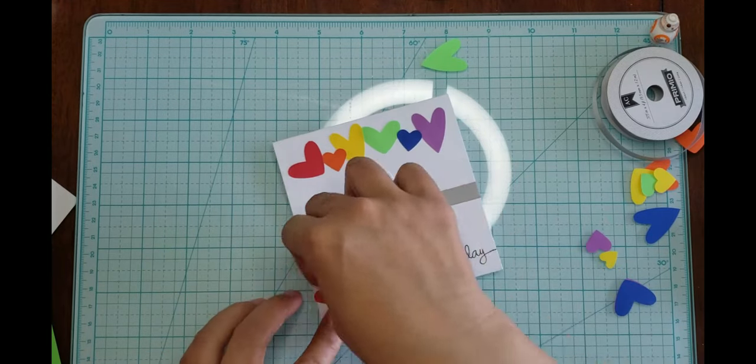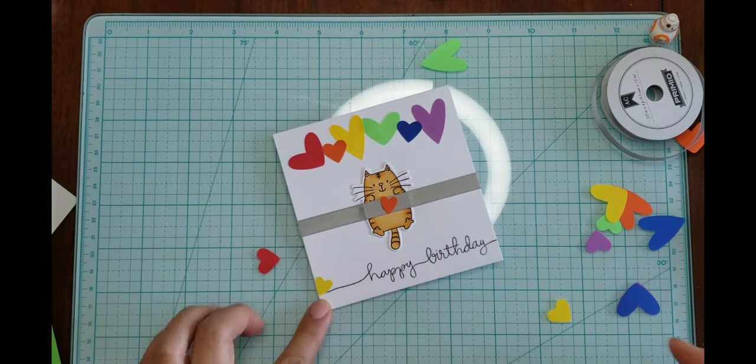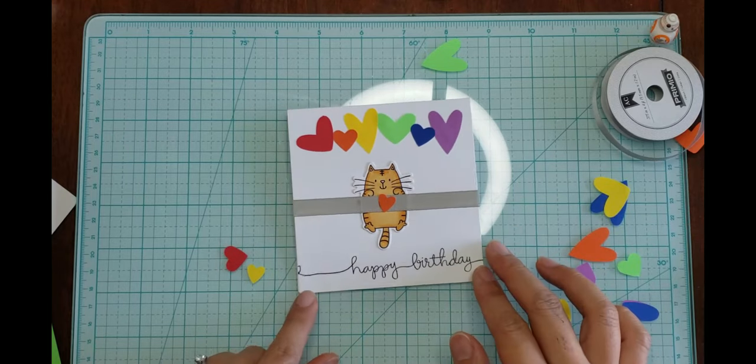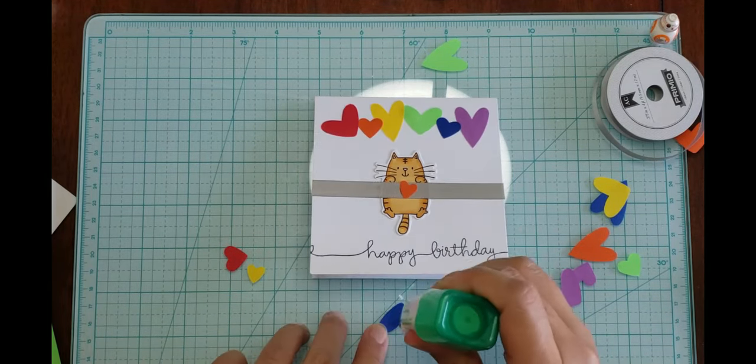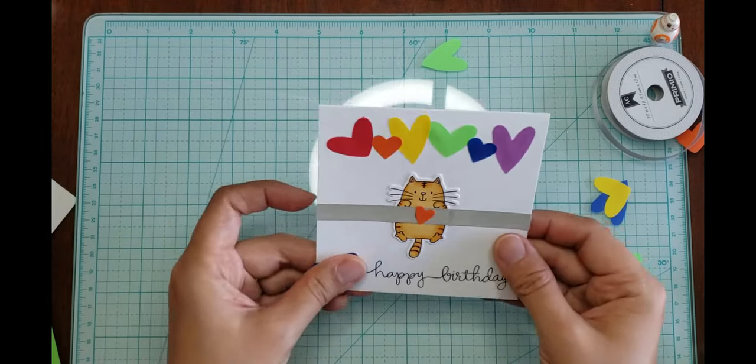If you're interested, I'll include a link in the description below. There was a little loop that I shouldn't have inked up when I was stamping it. It looked a little funny, so I just covered it up with a heart.